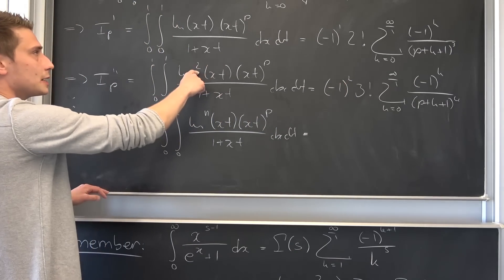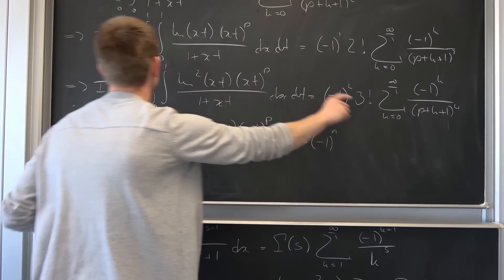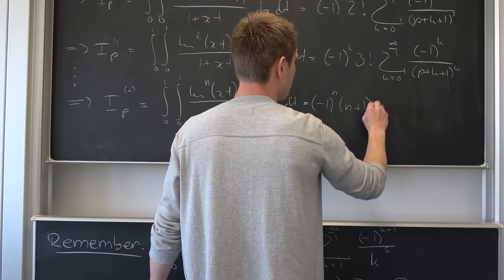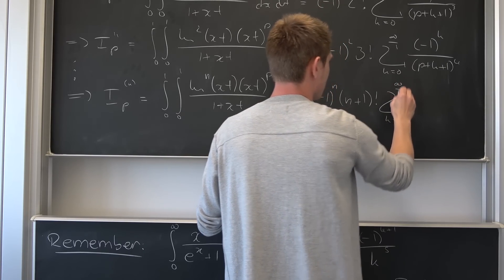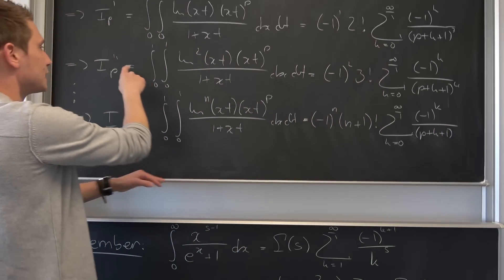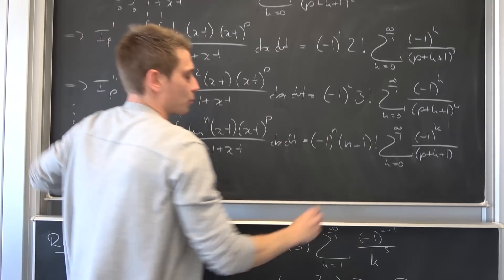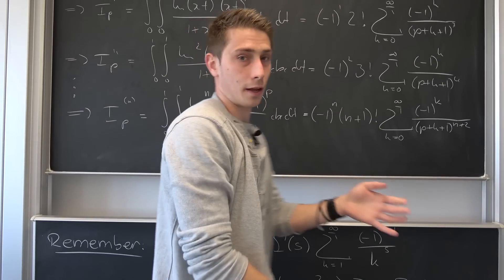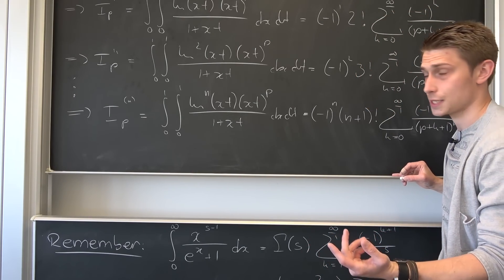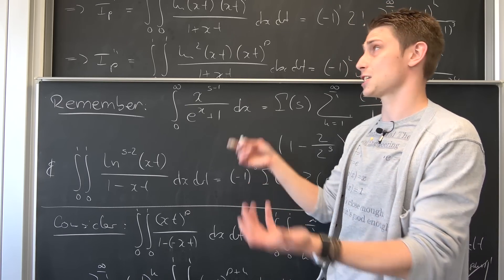So by the principle of mathematical induction, the n-th derivative of I is the integral from 0 to 1, 0 to 1, of natural log to the n-th power of x times t, times x times t to the p-th power over 1 plus x times t, dx dt. This equals negative 1 to the n-th power times n plus 1 factorial, times the sum from k equals 0 to infinity of negative 1 to the k-th power over p plus k plus 1 to the n plus 2 power. I'm running out of writable space, so I'm going to erase a bit and you can think about the next step — it's pretty analogous to what we did before with the Riemann zeta function.